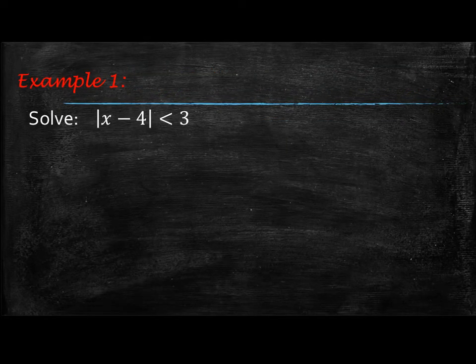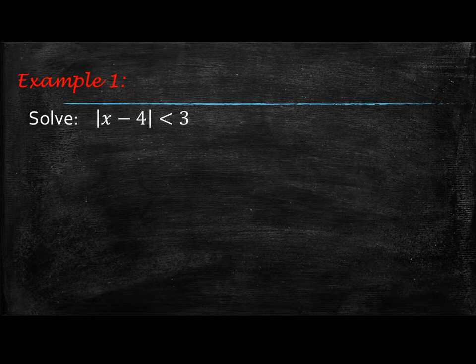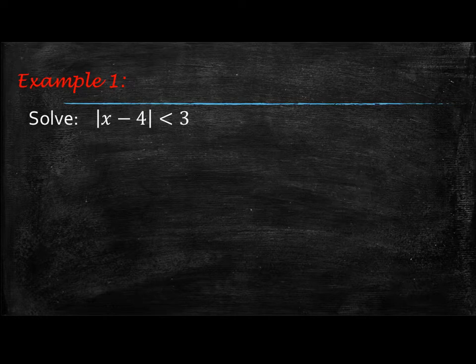Alright, so let's look at our first example. If you remember when we solved absolute value equations, we had some steps. The first step is you need to isolate that absolute value, and we're going to follow the same steps with inequalities. If we isolate our absolute value, that has already been done for us.